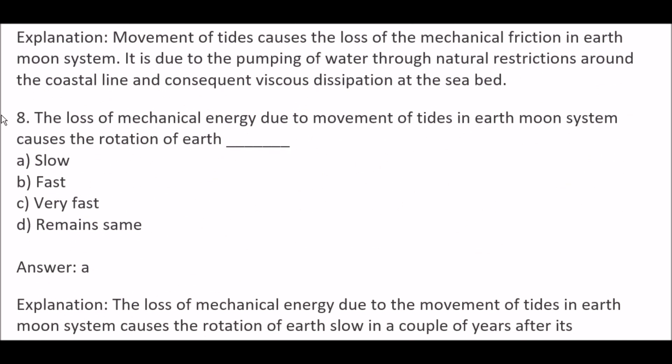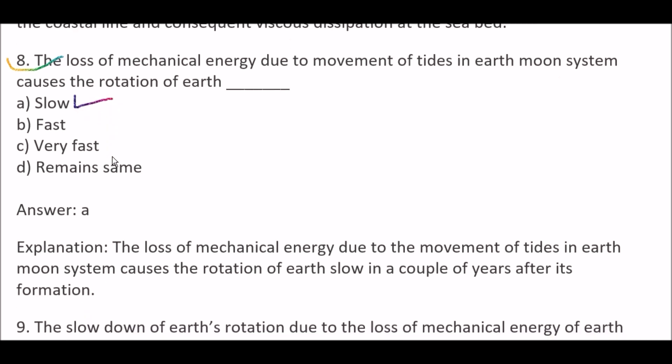Next question: The loss of mechanical energy due to movement of tides in the Earth-Moon system causes the rotation of Earth to — Option A, slow; Option B, fast; Option C, very fast; Option D, remain the same. Right answer is Option A, slow. The loss of mechanical energy causes the rotation of Earth to slow down, a couple of years after its formation.